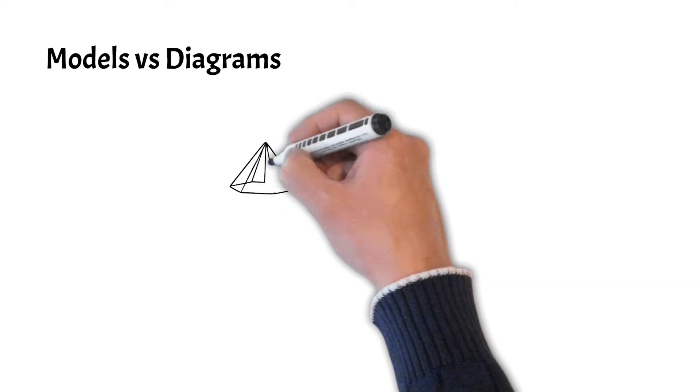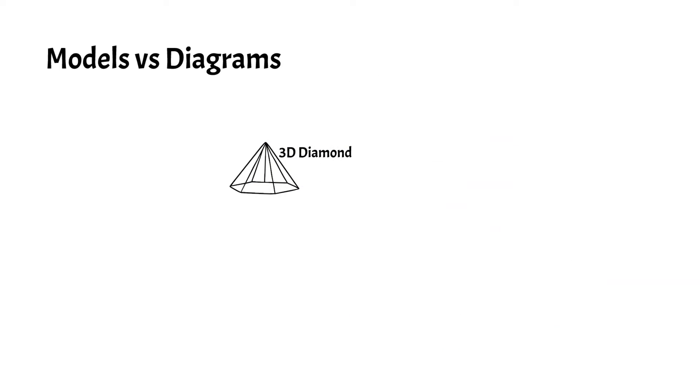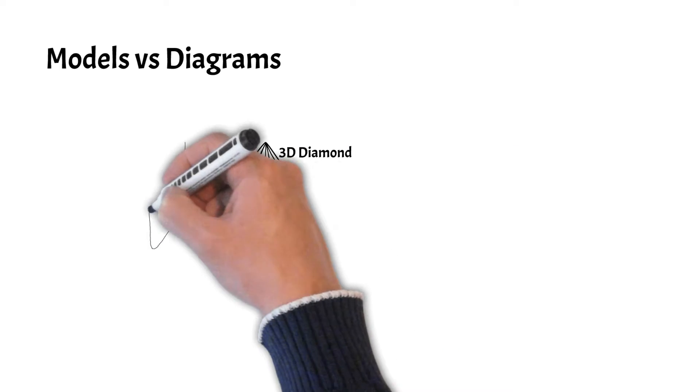There is an important distinction between the system model and the diagrams. Let's use a 3D physical diamond as an analogy which represents our model.